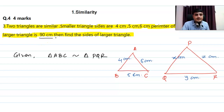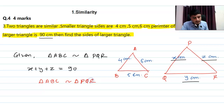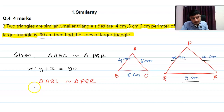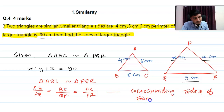Triangle ABC is similar to triangle PQR, and the perimeter of the larger triangle is 90 cm, so x + y + z = 90. Since corresponding sides of similar triangles are in equal proportion: AB/PQ = BC/QR = AC/PR, i.e., 4/x = 5/y = 6/z.